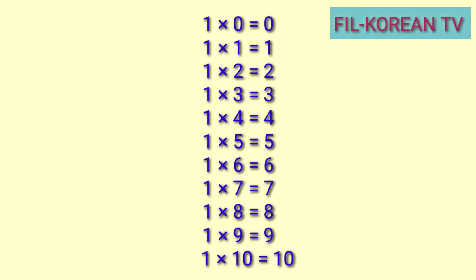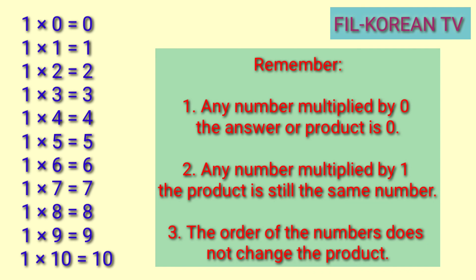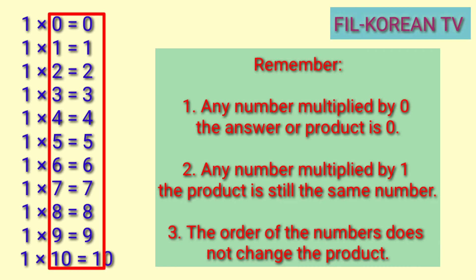In order for you to memorize the multiplication table easily, you need to remember 3 things. First, any number multiplied by 0, the answer or product is 0. Number 2, any number multiplied by 1, the product is still the same number. Like in our table 1.